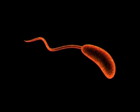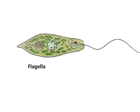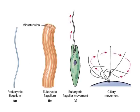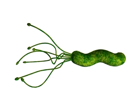A flagellum is a lash-like appendage that protrudes from the cell body of certain prokaryotic and eukaryotic cells. The word flagellum in Latin means whip. The primary role of the flagellum is locomotion, but it also often functions as a secondary organelle, being sensitive to chemicals and temperatures outside the cell. Flagella are organs defined by function rather than structure. Prokaryotic and eukaryotic flagella differ greatly in protein composition, structure and mechanism of propulsion, but both are used for swimming. An example of a flagellate bacterium is the ulcer-causing Helicobacter pylori, which uses multiple flagella to propel itself through the mucus lining to reach the stomach epithelium.